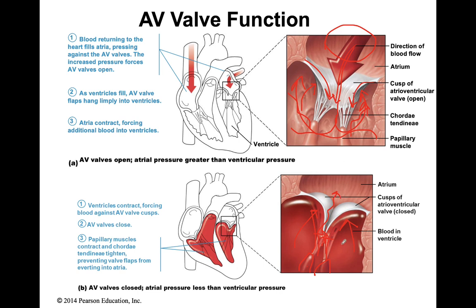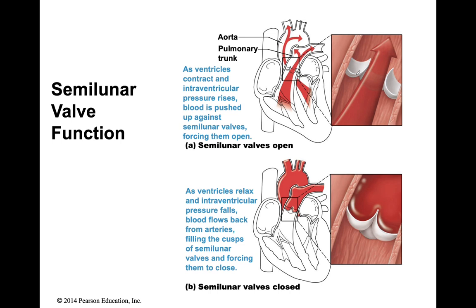The semilunar valves look different — they don't have any chordae tendineae or papillary muscles, but they work similarly. Think of them as little cups open only to the direction of blood flow. When the ventricles contract, they shoot blood up at high pressure and push these doors open. Inevitably the blood starts falling back down, and when it falls back, these little cups of the semilunar valves catch that blood, and the high pressure pushes the valve shut to prevent blood from leaking backwards.